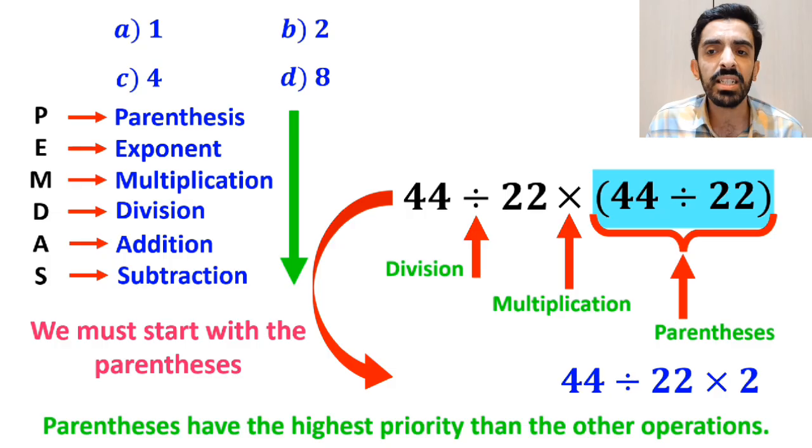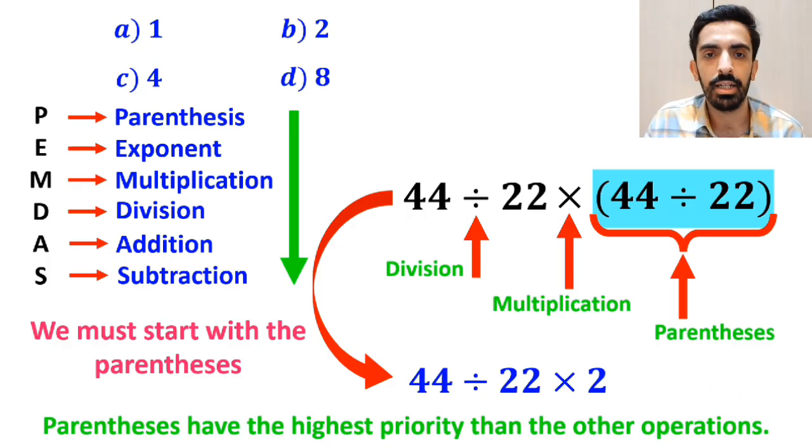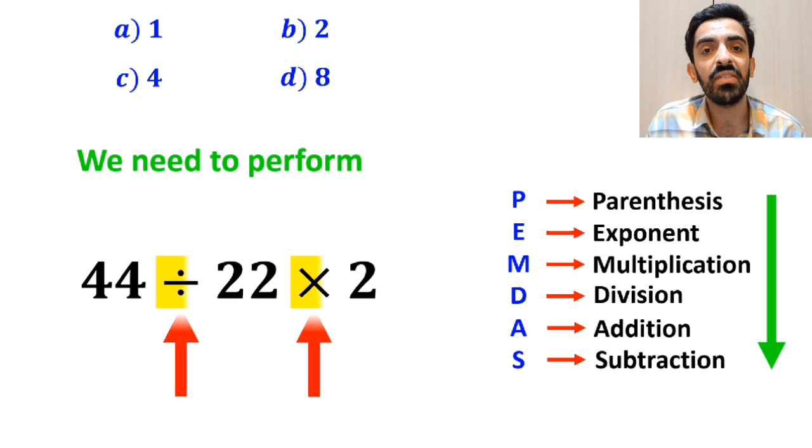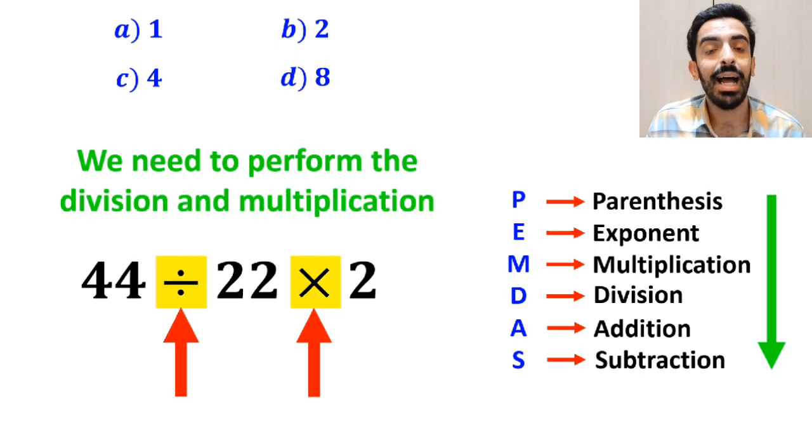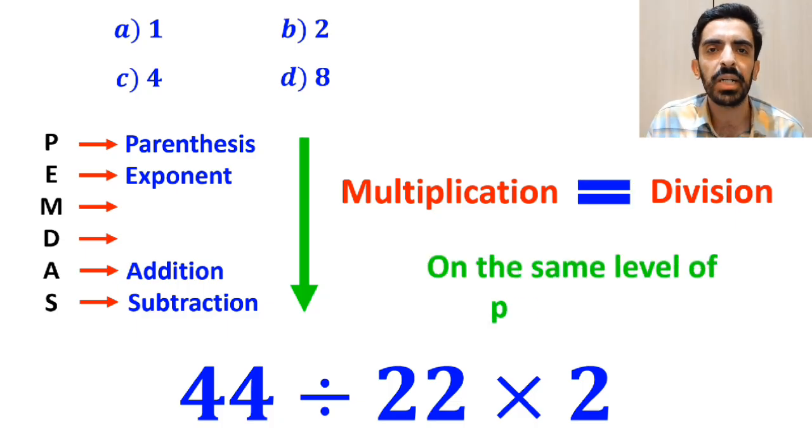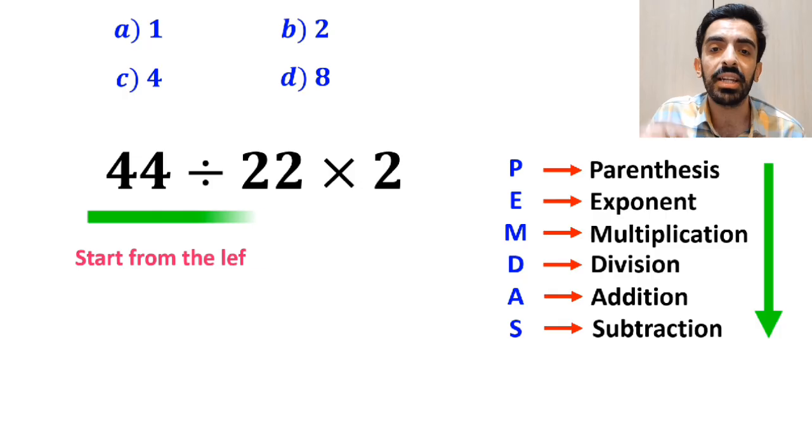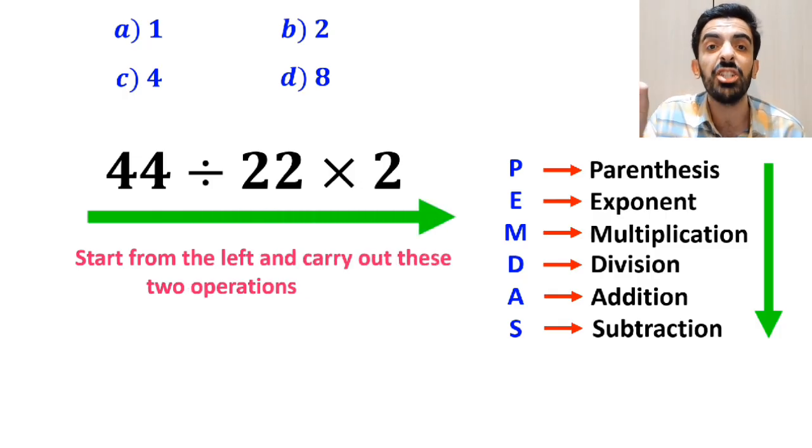So, we rewrite this expression as 44 divided by 22 multiplied by 2. Now we need to perform the division and multiplication. However, it's very important to keep in mind that multiplication and division are on the same level of precedence. In this case, the best approach is to start from the left and carry out these two operations in order.